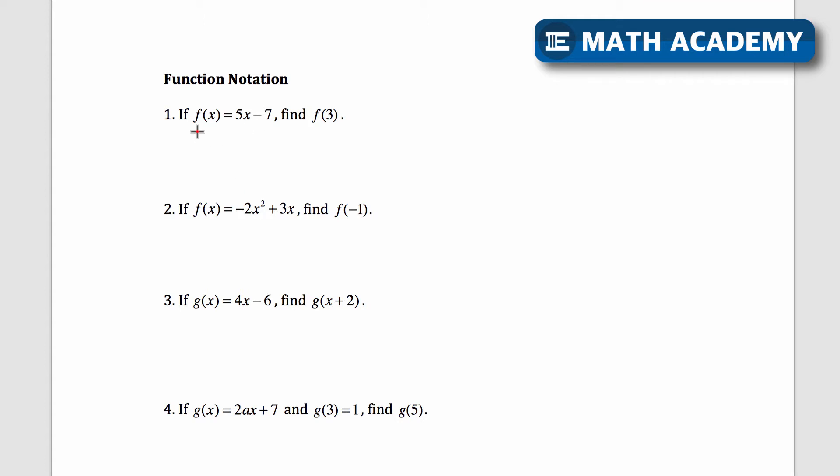So first of all, function notation just means that if you have this f of x equals 5x minus 7 equation, this function is called f of x, and the rule is you do 5 times the input. The input is whatever is in this parenthesis here. You do 5 times the input, you subtract 7, and it says find f of 3.